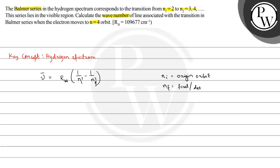And nf is the final or destination orbit. So here, what is nᵢ? nᵢ is 2 because in Balmer series, the second orbit is where the transition starts. And here nf is 4, so nf equals 4.